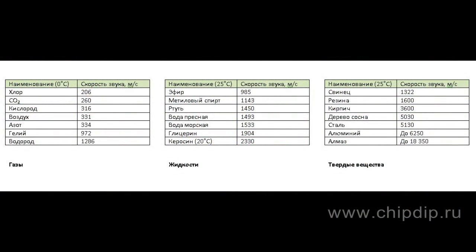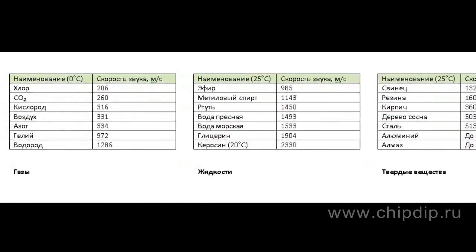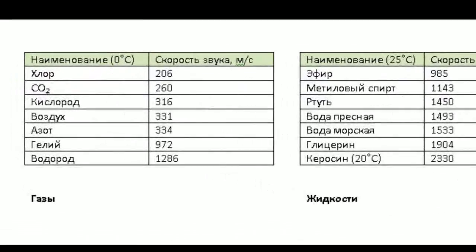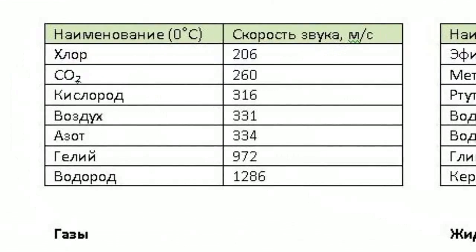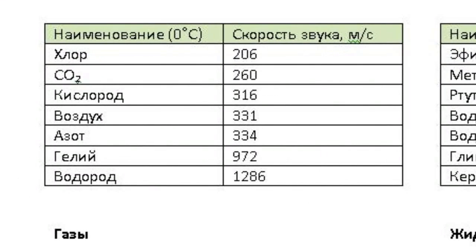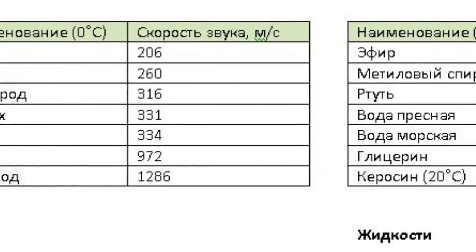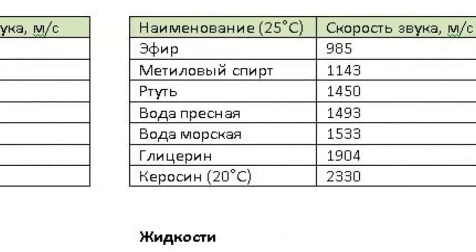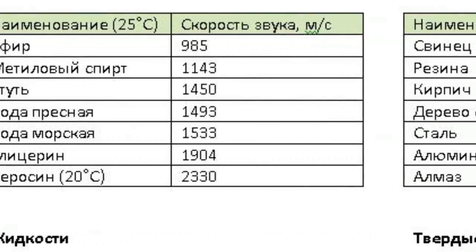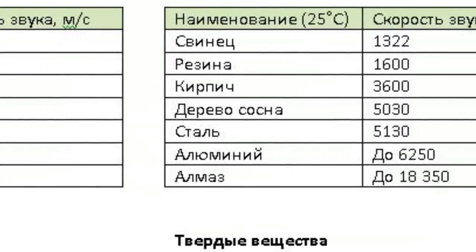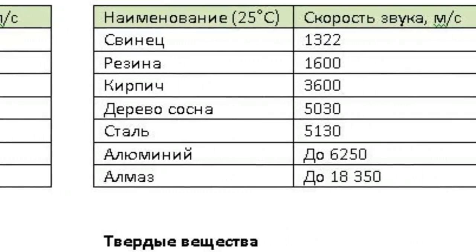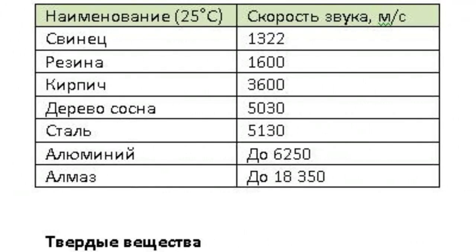What is the speed of sound in various substances? You can find the answers in a chart. William Durham, a contemporary of Newton, was the first to measure the speed of sound. The speed of sound in air at a temperature of zero degrees and at normal atmospheric pressure equals 331 meters per second, which is about 1,193 kilometers per hour.